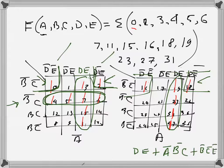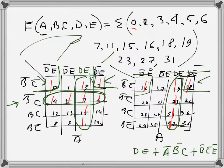So the minimized expression is d·e + ā·b̄·c + b̄·c̄·ē. That is the minimized expression obtained from the given sum of products expression using the K-maps.